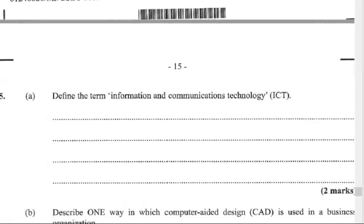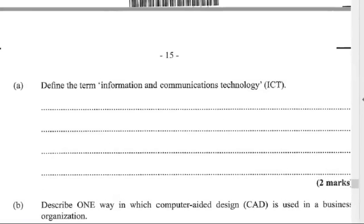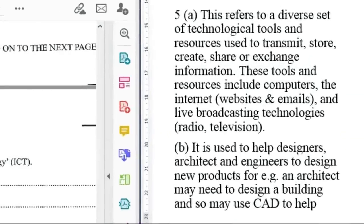5A, define the term information and communication technology, ICT. This refers to a diverse set of technological tools and resources used to transmit, store, create, share, or exchange information. These tools and resources include computers, the internet such as websites and emails, and live broadcasting technologies like radio and television.